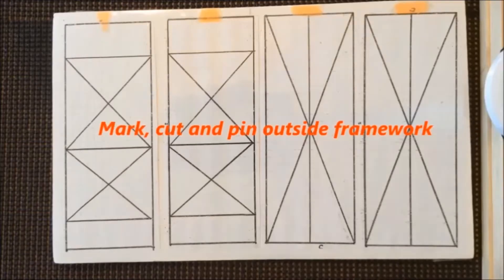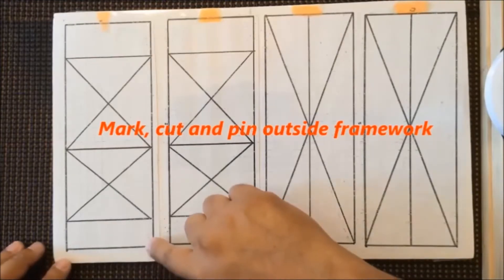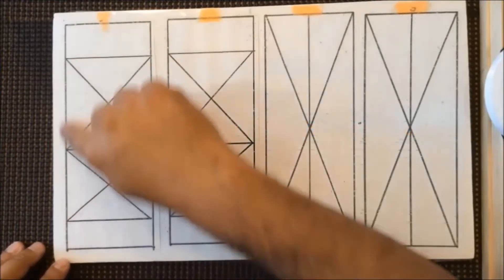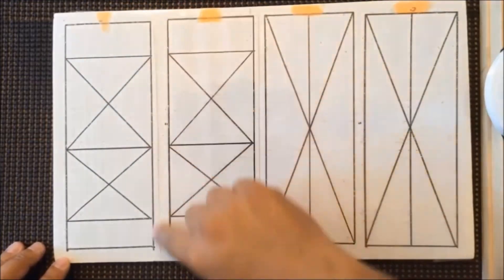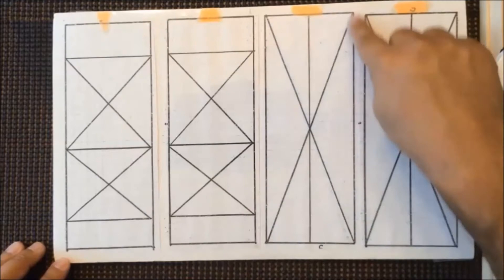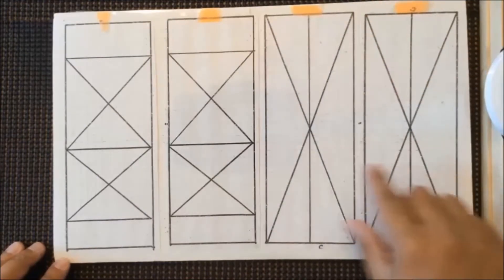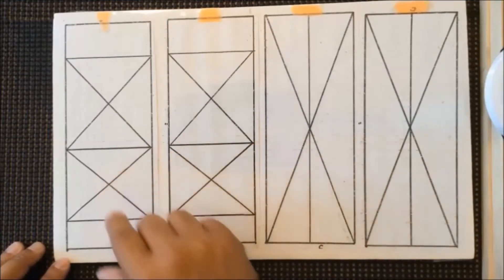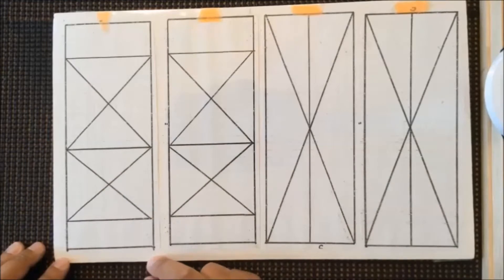As you begin constructing your tower, you will notice you have four views to build. First thing I'm going to do is cut, pin, and glue the outside frame of each view. This way we have a framework in place for all four of your views. We'll begin by cutting the vertical pieces first.